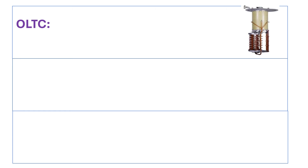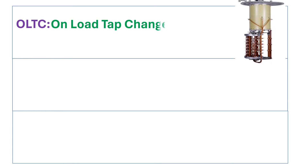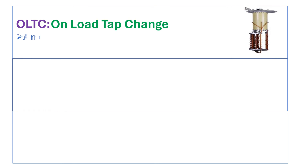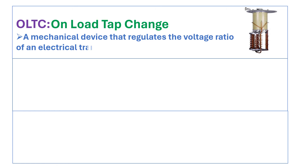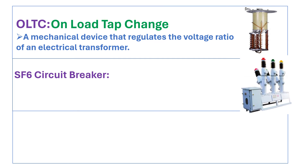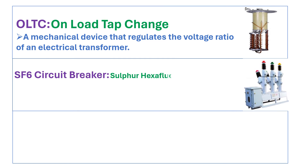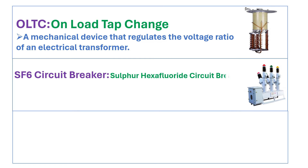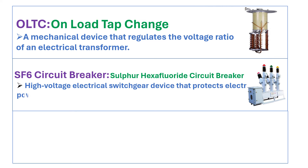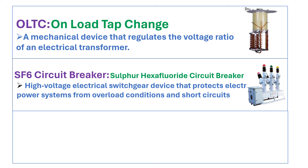OLTC stands for on load tap changer. It is a mechanical device that regulates the voltage ratio of an electrical transformer. SF6 circuit breaker stands for sulfur hexafluoride circuit breaker. It is a high voltage electrical switchgear device that protects the electrical power system from overload conditions and short circuits.